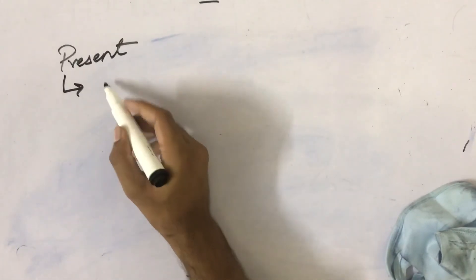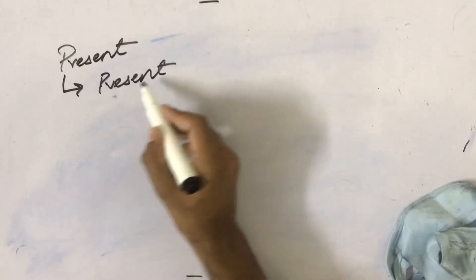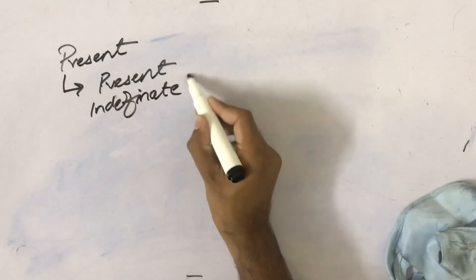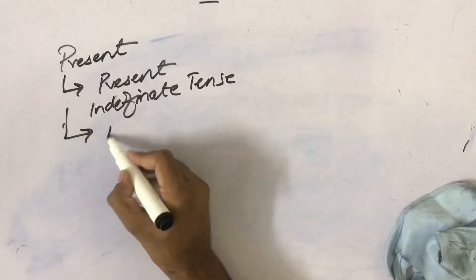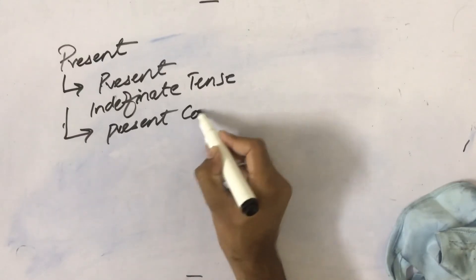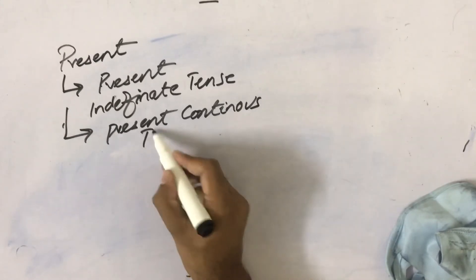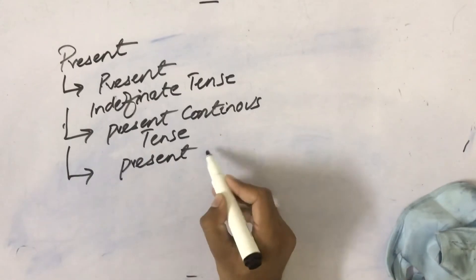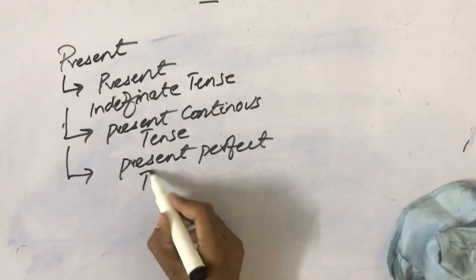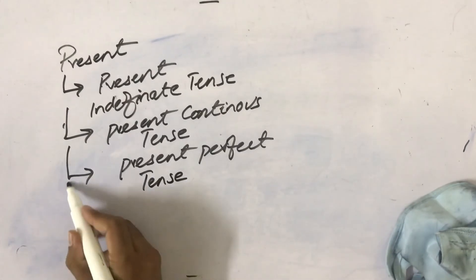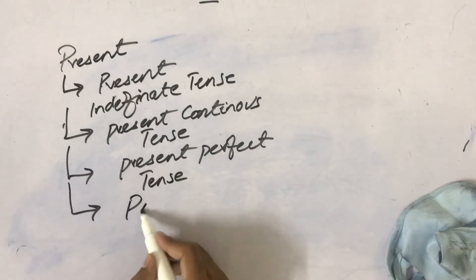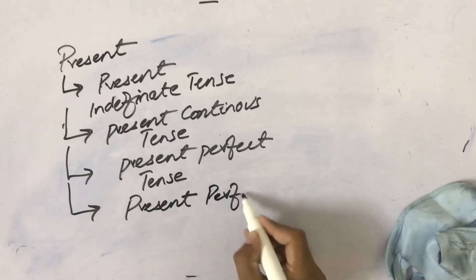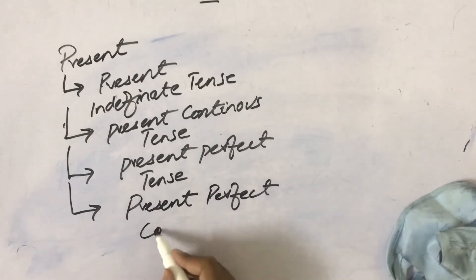Present tense — present indefinite tense, present continuous tense, present perfect tense, and present perfect continuous tense.